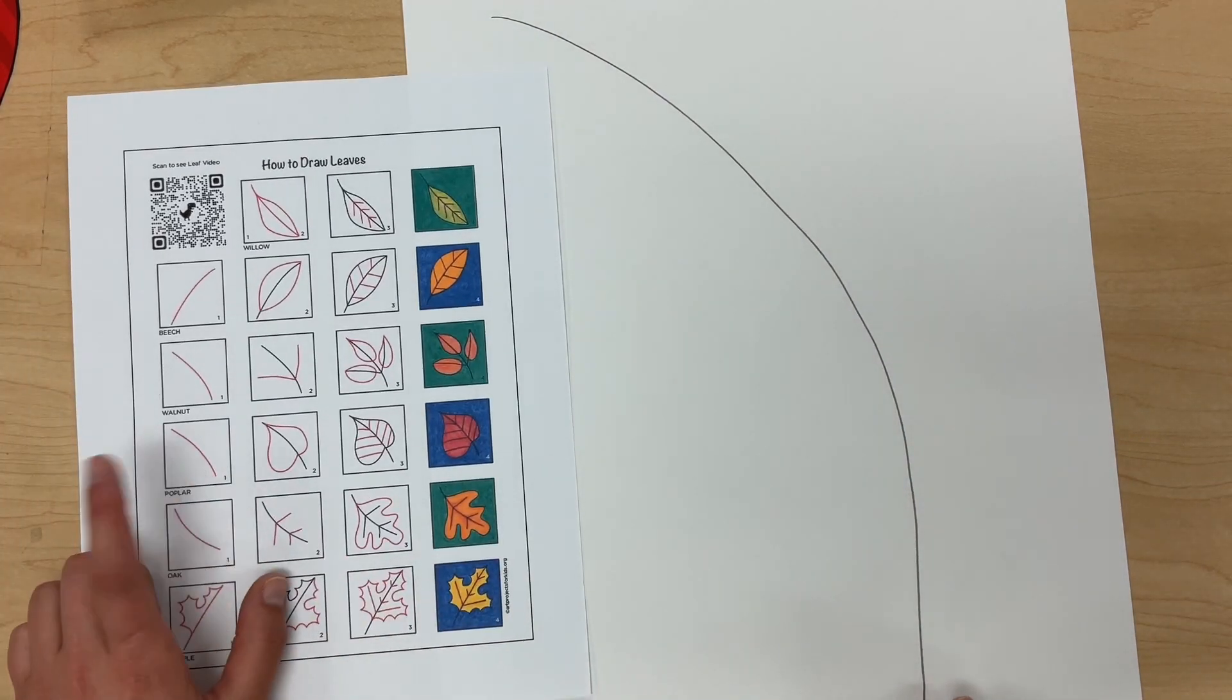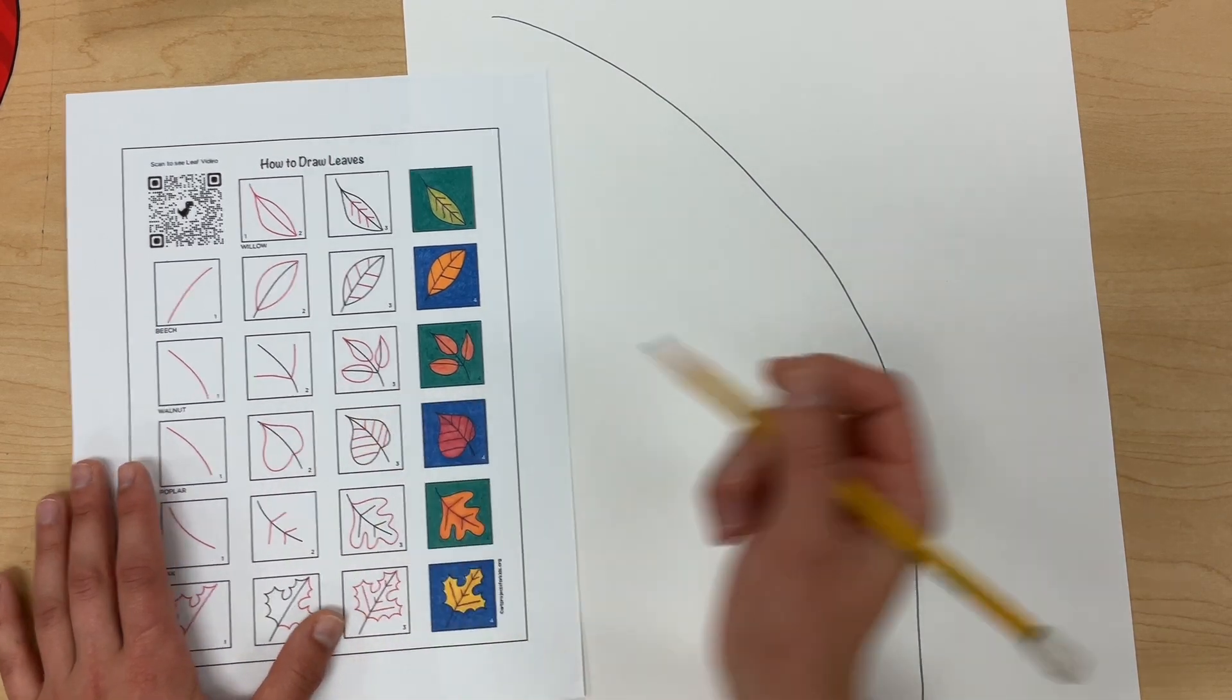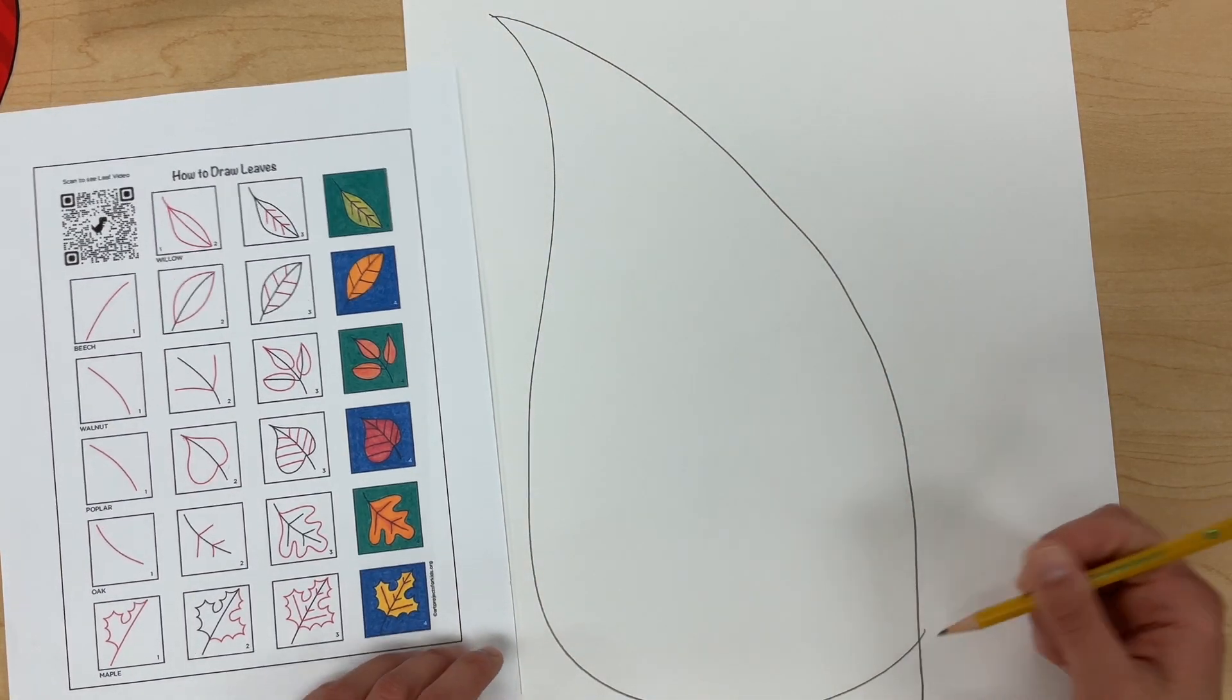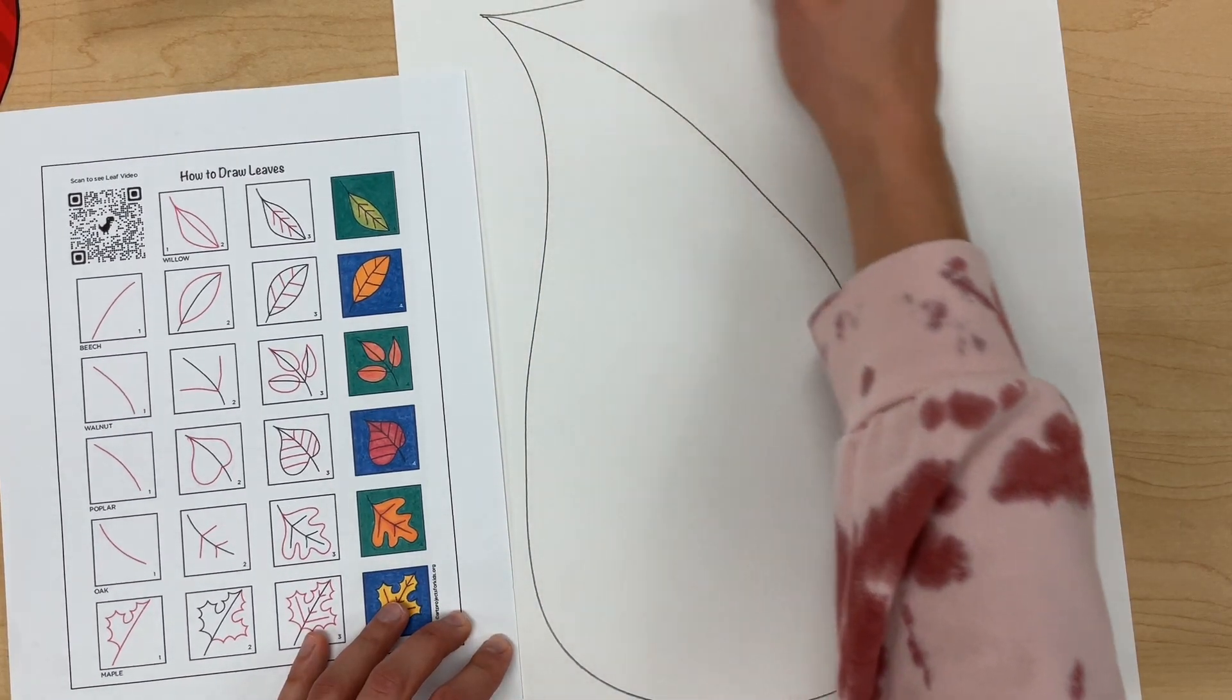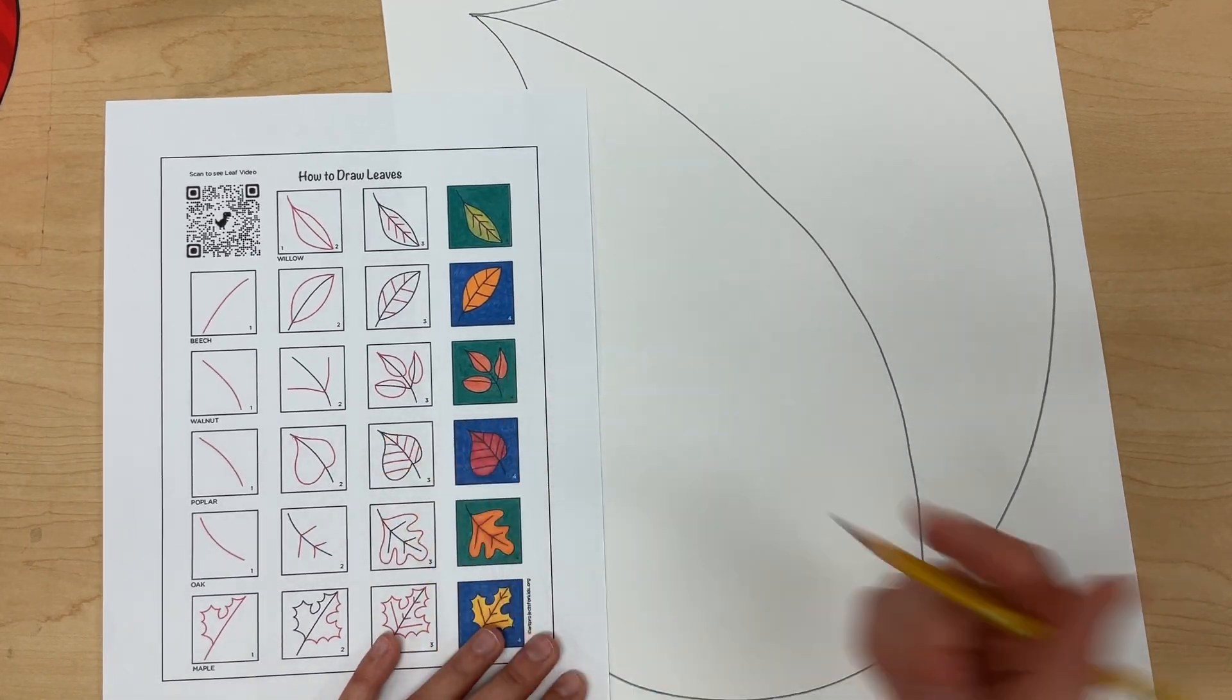And this might be a little hard for you to see because my camera is not as wide. The next thing I'm going to draw are the curved lines for the outsides of my leaf. And again, this doesn't have to look exactly like the leaf on our paper. Mine doesn't look exactly like that, but that's okay.